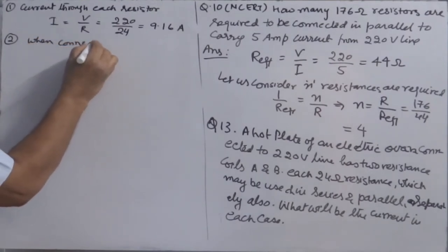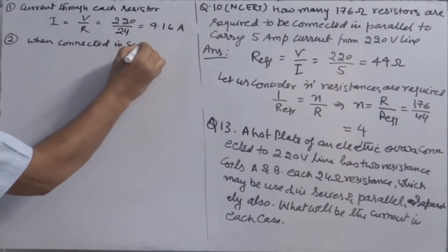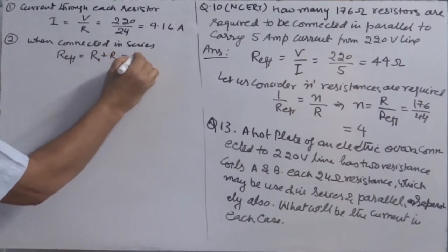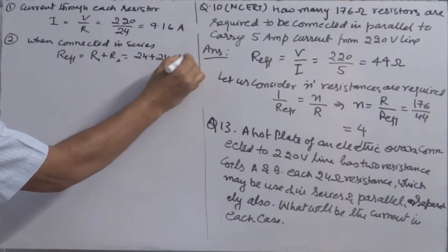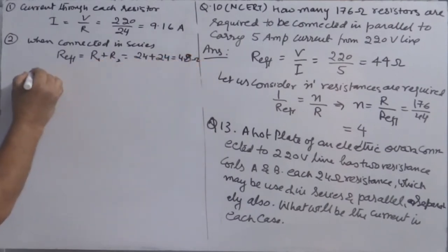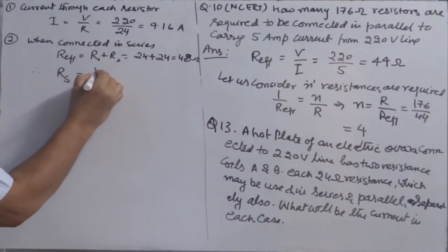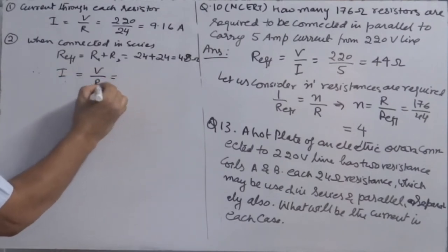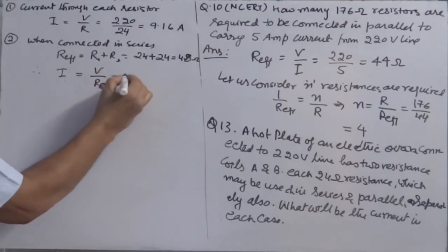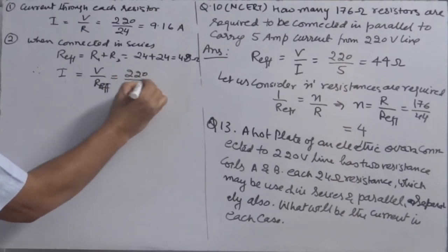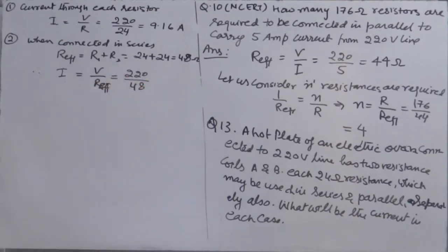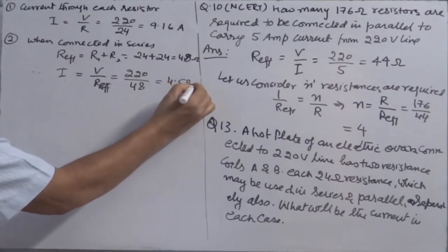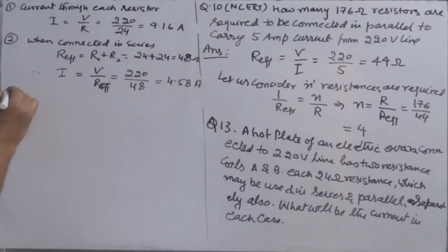Current in series = V / R_effective = 220 / 48 = 4.58 ampere. In series the current decreases, as expected.